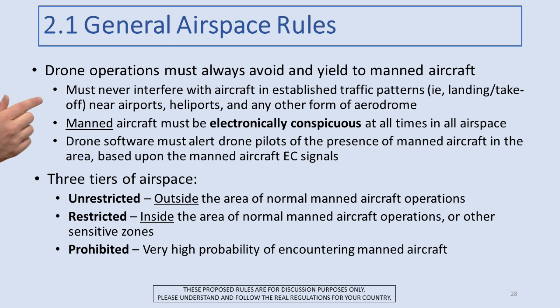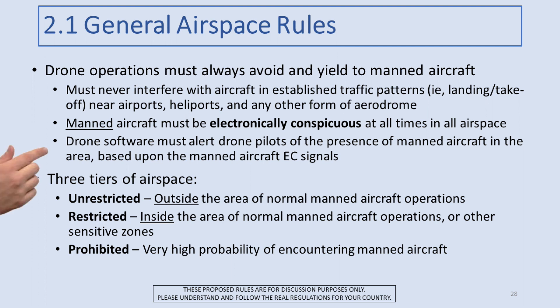The next point is both sensible and yet ridiculously not mandatory in today's rules. Manned aircraft must be electronically conspicuous at all times in all airspace. It makes no sense that drone operators are supposed to stay away from manned aircraft, and yet the only tools at a drone pilot's disposal are their own ears and eyes. Drone software must alert drone pilots of the presence of manned aircraft based upon those EC signals — and this should be mandatory. DJI has demonstrated this on some of their higher-end commercial drones and it works.